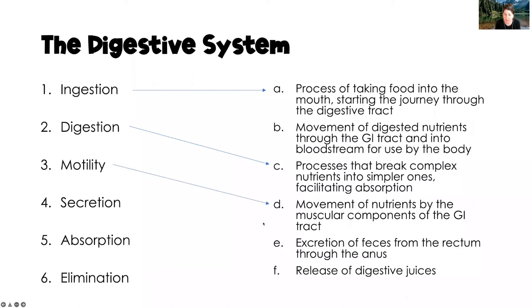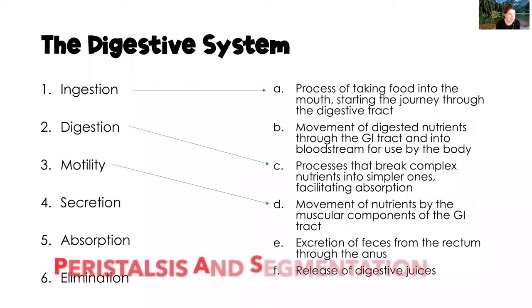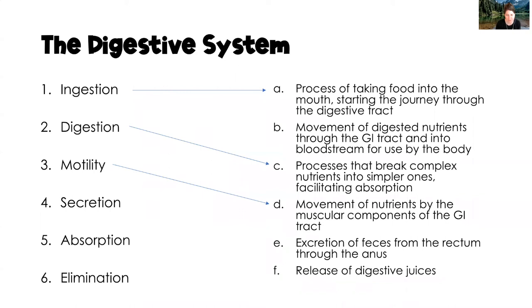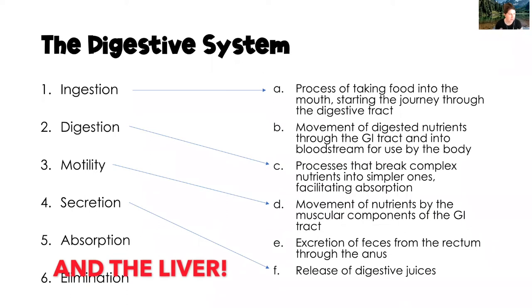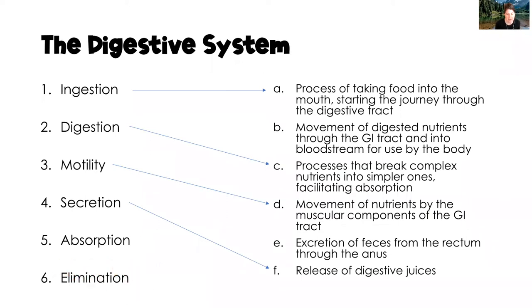Motility is the movement of nutrients by the muscular components of the GI tract — this is peristalsis that moves nutrients through the muscular component. Secretion is the release of digestive juices by the pancreas and by the gallbladder, so that those nutrients can be further broken down and then absorbed into the body.